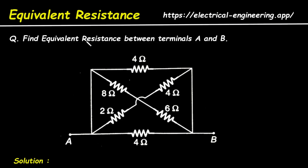Question: Find equivalent resistance between terminals A and B. For this network, we have to determine its equivalent resistance.